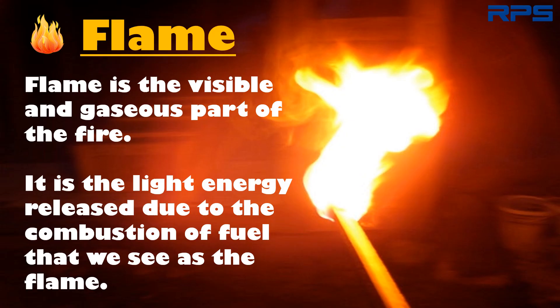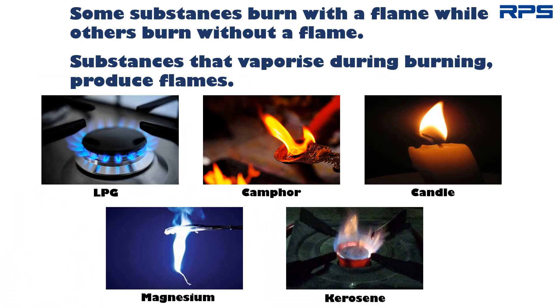Now let us study about flame. Flame is the visible and gaseous part of the fire. It is light energy released due to the combustion of fuel that we see as flame. Certain substances burn with a flame while others burn without a flame. Substances that vaporize during burning produce flames. LPG, camphor, candle, magnesium, and kerosene are examples of substances that produce flame on burning.